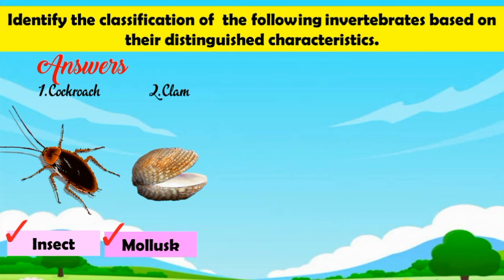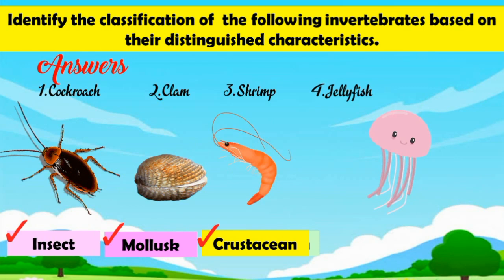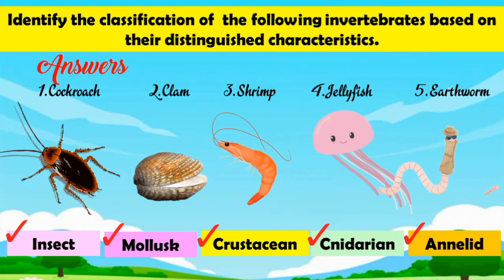Clam is a mollusk. Correct. Number 3: Shrimp. A shrimp is a crustacean. Correct. Number 4: Jellyfish. A jellyfish is a cnidarian. Correct. And lastly, earthworm. Earthworm is an annelid. Correct. Good job!